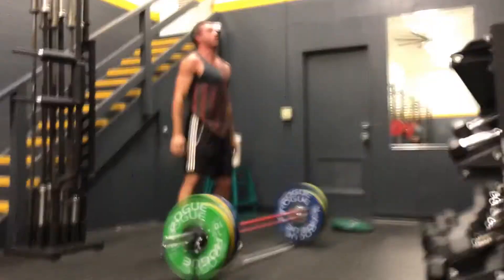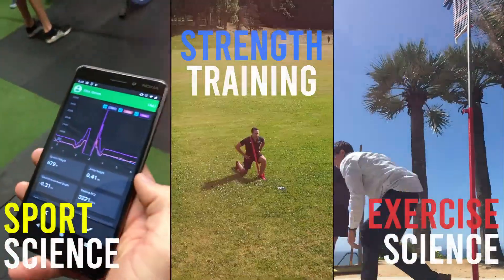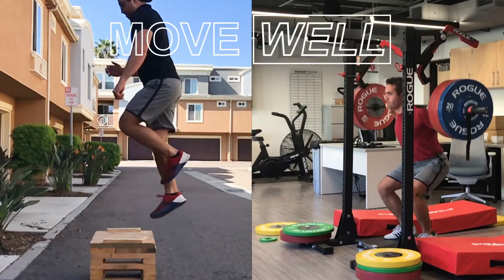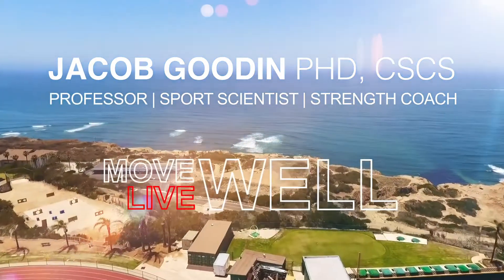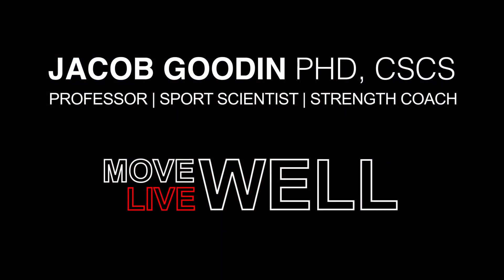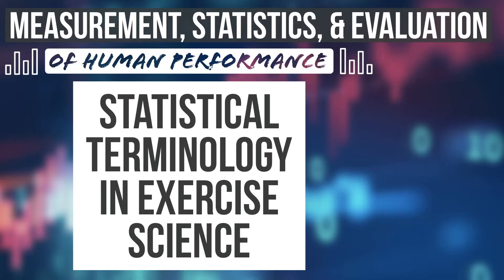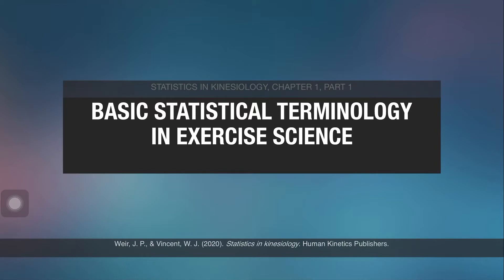What's up guys, Dr. Gooden here to talk about some basic terminology in statistics for exercise science. In this video we are going to cover a broad overview of some definitions as well as break down some differences in data and how we categorize data and various types of numbers. This comes from the book Statistics in Kinesiology by Ware and Vincent, the newest edition — a very good textbook. There's a link to it in the description.